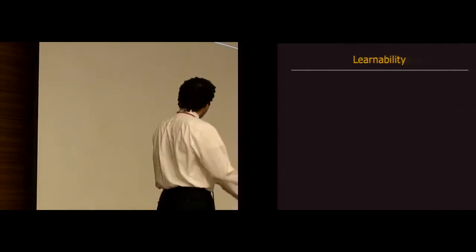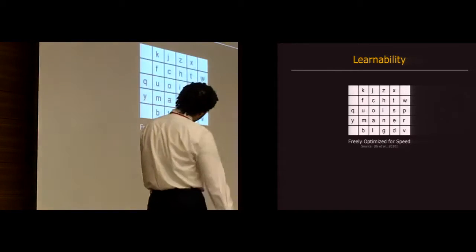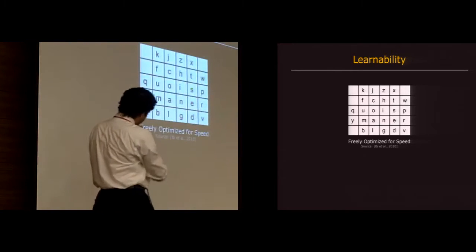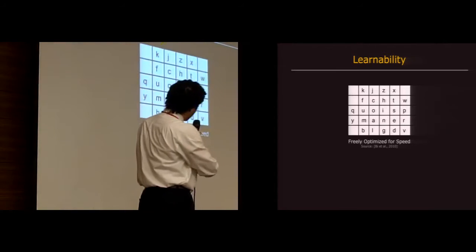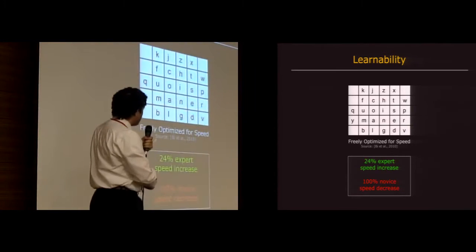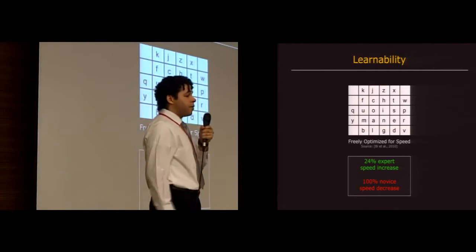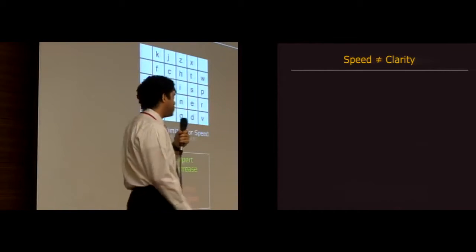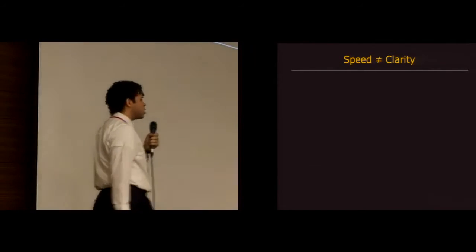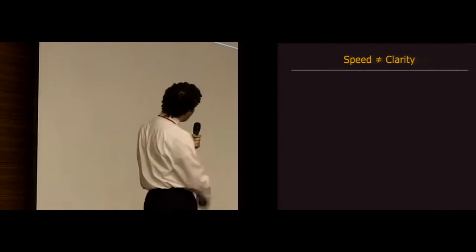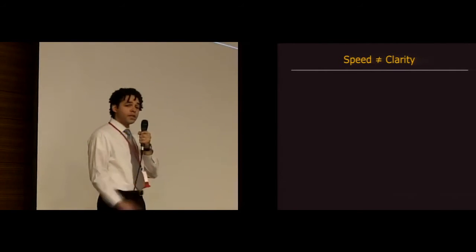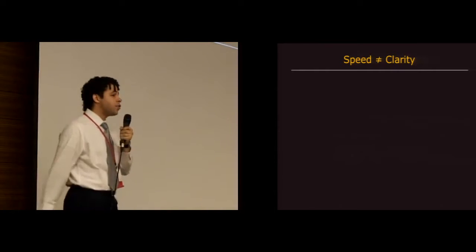So the upfront cost of learning a keyboard layout is much greater than the eventual benefit that you'll get from using that new layout. Case in point, Xiaojun Bi and company found that if you freely optimize a layout for speed, you'll eventually be 24% faster at the upfront cost of being 100% slower.